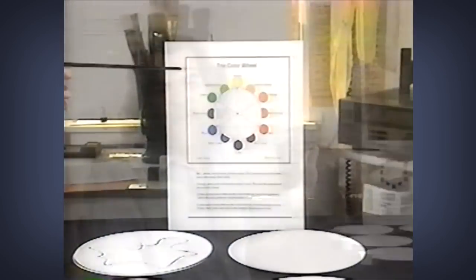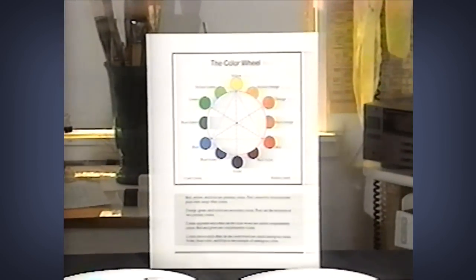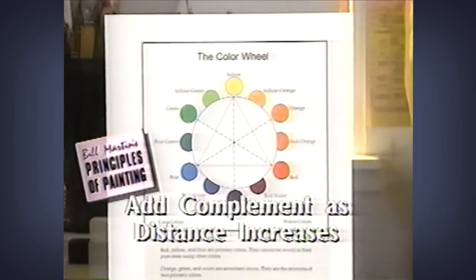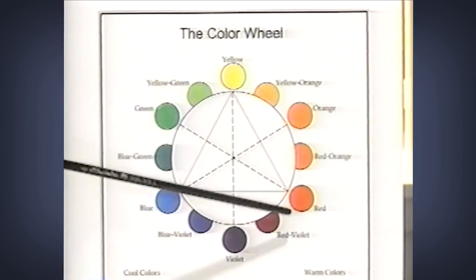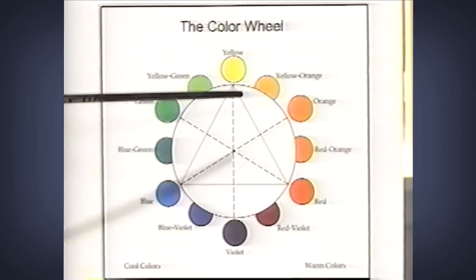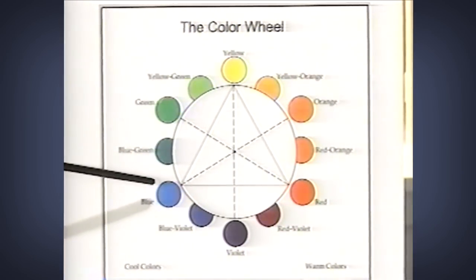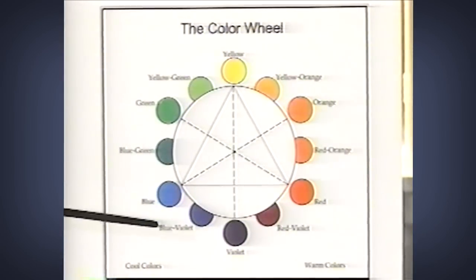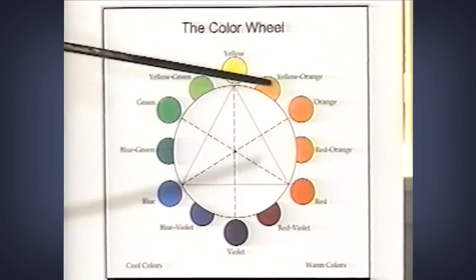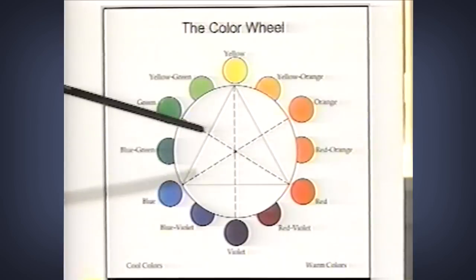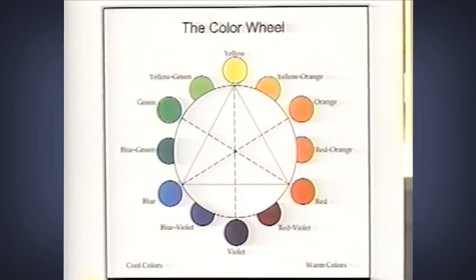What happens to color is that as distance is increased, its complement is added to it. Here on the color wheel, green is opposite red — these are complementary colors. Any colors opposite each other on the color wheel are considered complementary colors. So violet is opposite yellow — those are complements. Orange and blue are complements. Blue-green and red-orange are complements. The purest color will be in the foreground, and that same color will change by the addition of its complement as distance is increased.